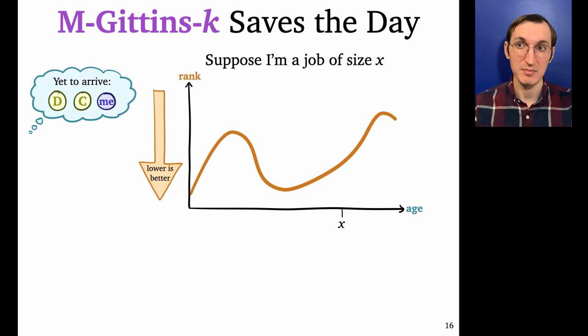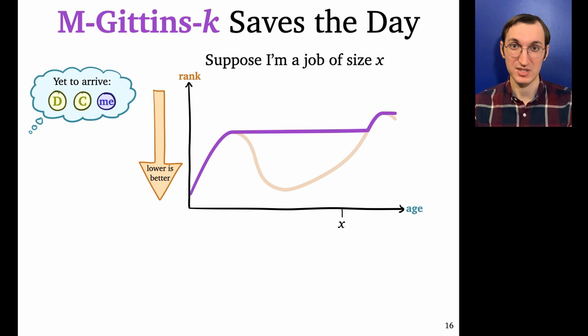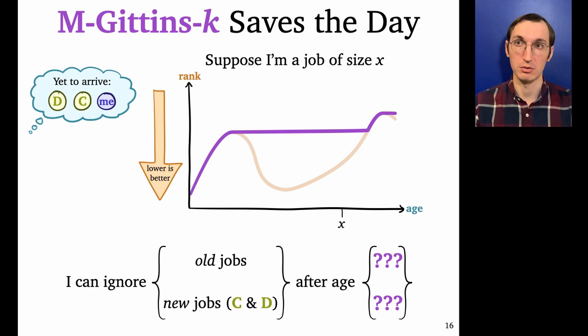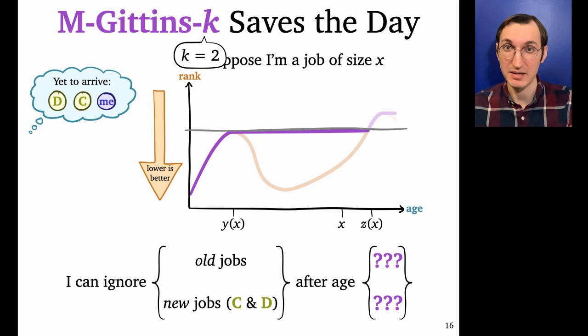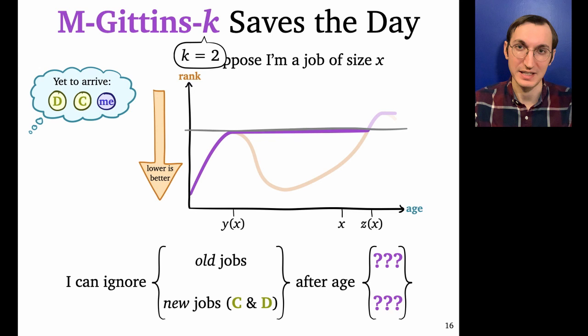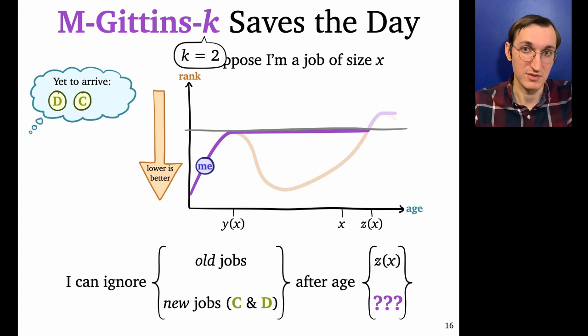Okay. So now let's see how using the M-Gittins rank function in place of the Gittins rank function saves the day and prevents the problem we just saw. So we're going to answer the same two questions about M-Gittins-k. When can we ignore old and new jobs? Again, for k equals two servers. So right off the bat, let's observe that we can still use the same gray line that we were using for Gittins. We can define the same ages Y and Z, this time using the plateau of the rank function rather than the valley. Okay. And for old jobs, it turns out the answer is still, we can ignore them after age Z of X.